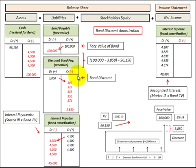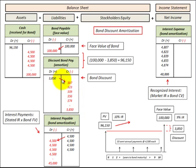So what we have to do is amortize this discount over the life of the bond. We have to bring it down to its balance — you've got the $3,850 debit balance, and then credits would total $3,850 at the maturity of that bond, leaving a zero amount in that discount. That would bring your bonds payable amount up to the face value of $100,000.